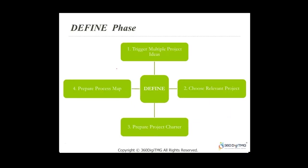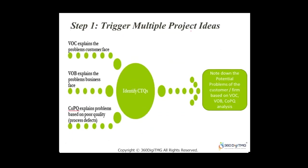There are four steps in the Define phase. The first step is triggering multiple project ideas; the second is identifying the most relevant ideas; the third is preparing the project charter; and the fourth is preparing the process map at a high level. What are the typical triggers for generating project ideas?